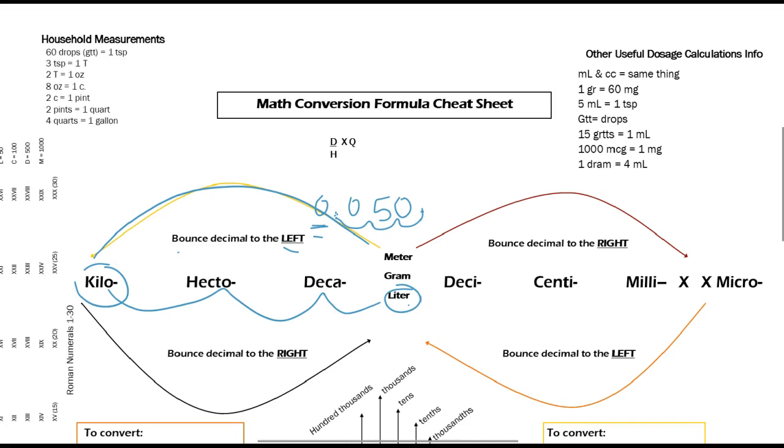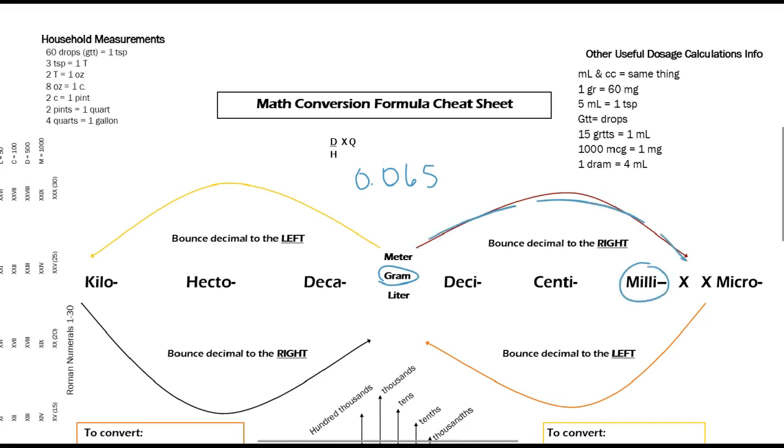Okay, so our next problem is 0.065 grams and we want to know how many milligrams that is. So we are going to follow our arrow again and bounce our decimal to the right once, twice, three times to land on milligrams. So we take our decimal here from 0.065 and bounce it once, twice, three times, and that makes the decimal behind the five. So that gives us 65 milligrams. So 0.065 grams is the equivalent of 65 milligrams.